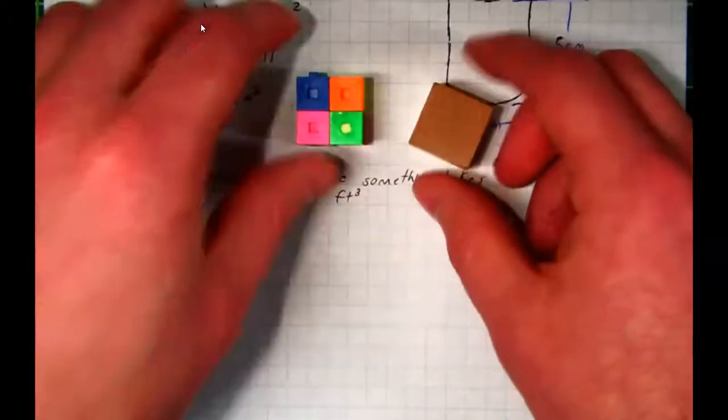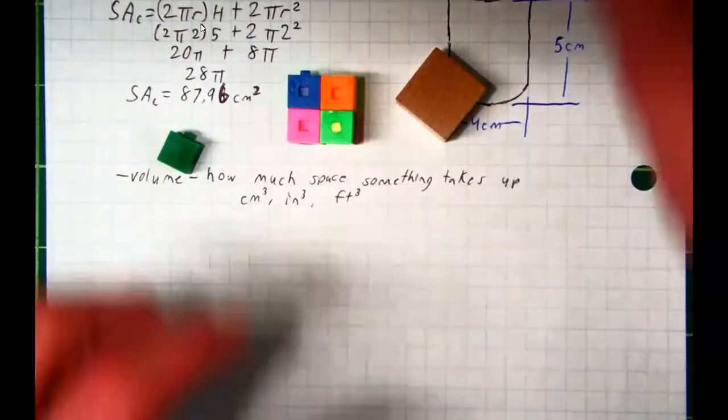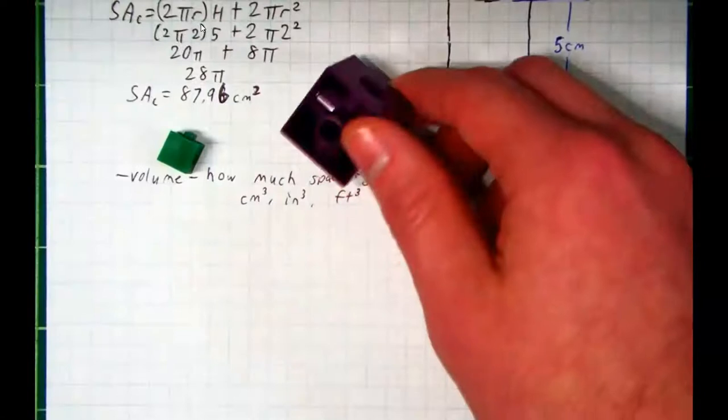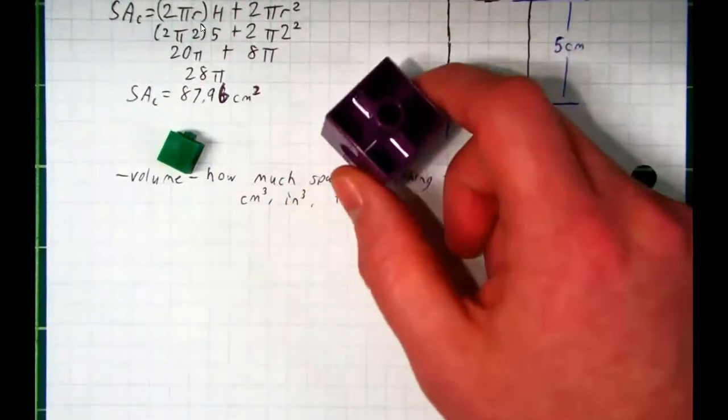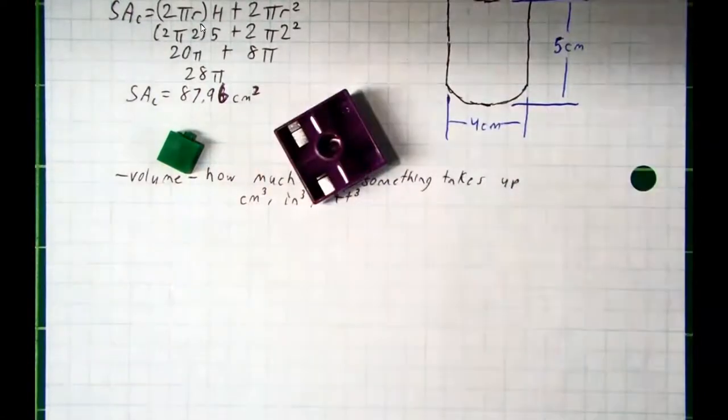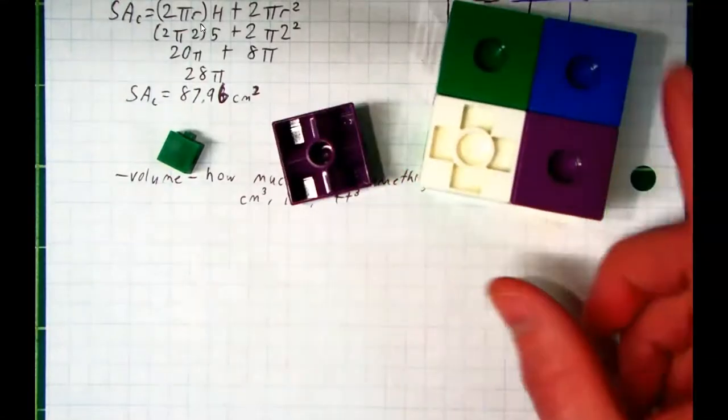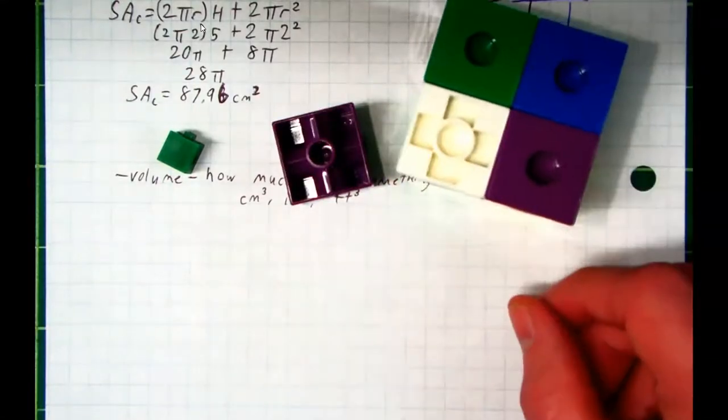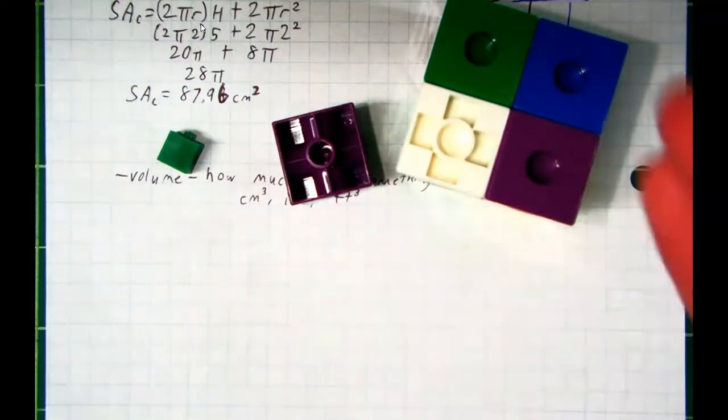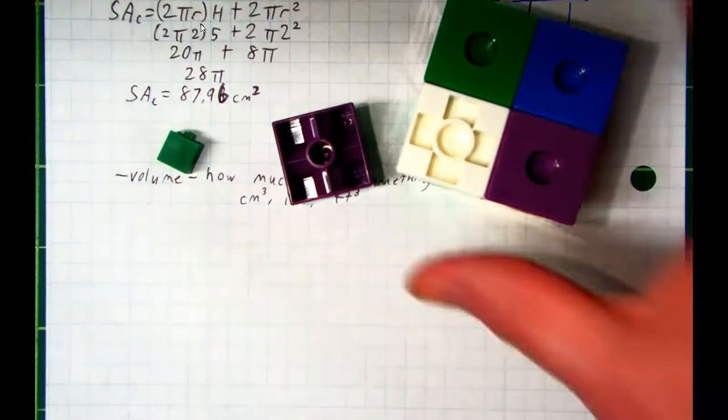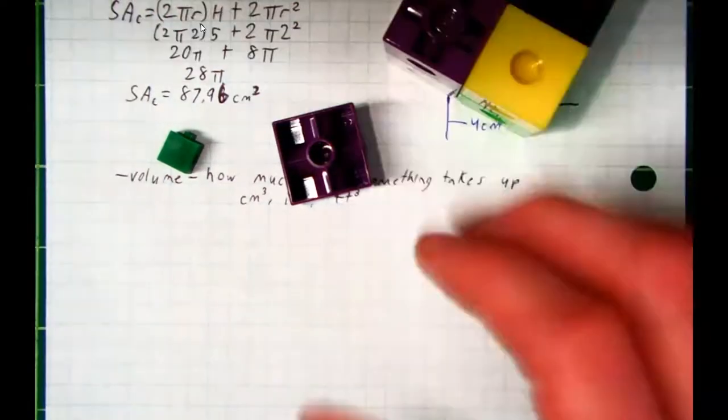These take up the same volume. This is a one-inch cube. It takes up one cubic inch of space. This is eight of them put together into a bigger cube, two inches by two inches by two inches. Does this make way too much sense? We're literally measuring how much space it takes up. This takes up this much space.